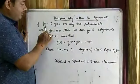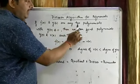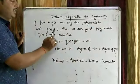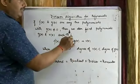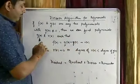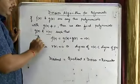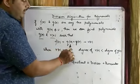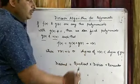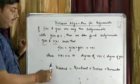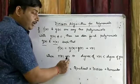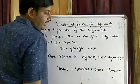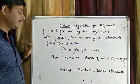If f(x) and g(x) are any two polynomials with g(x) not equal to 0, then we can find polynomials q(x) and r(x) such that f(x) = q(x) × g(x) + r(x), where r(x) = 0 or degree of r(x) is less than degree of g(x).